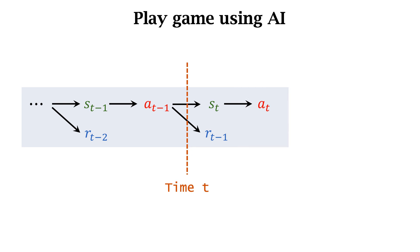The agent executes a_t. Then the environment updates the state to s_{t+1} according to the state transition function p. The environment also provides us with a reward r_t. At time t+1, we observe s_{t+1} and r_t. We can continue this process to the end of the game.